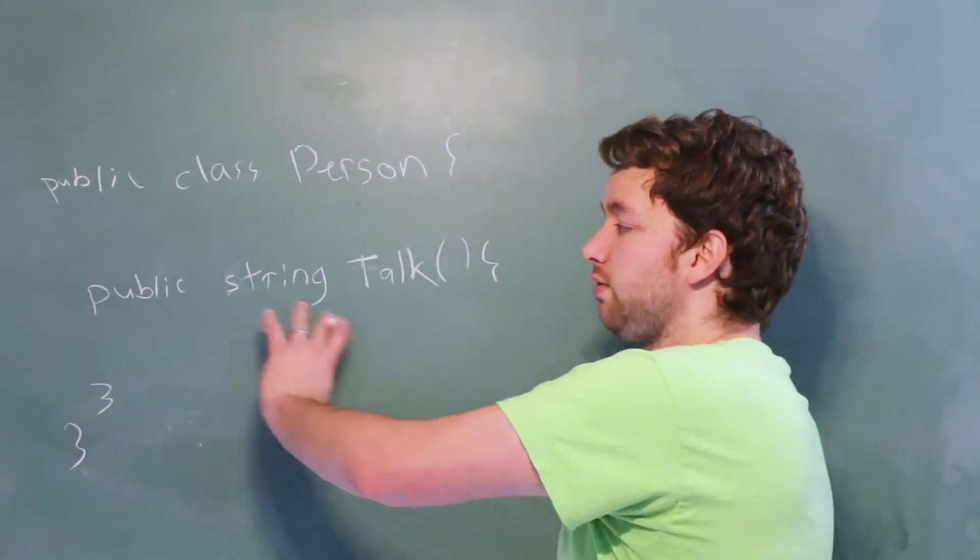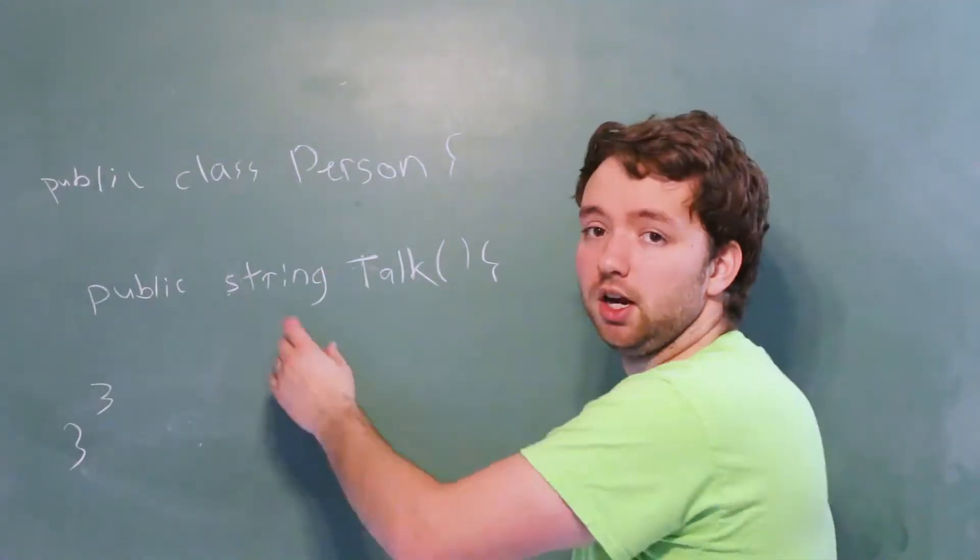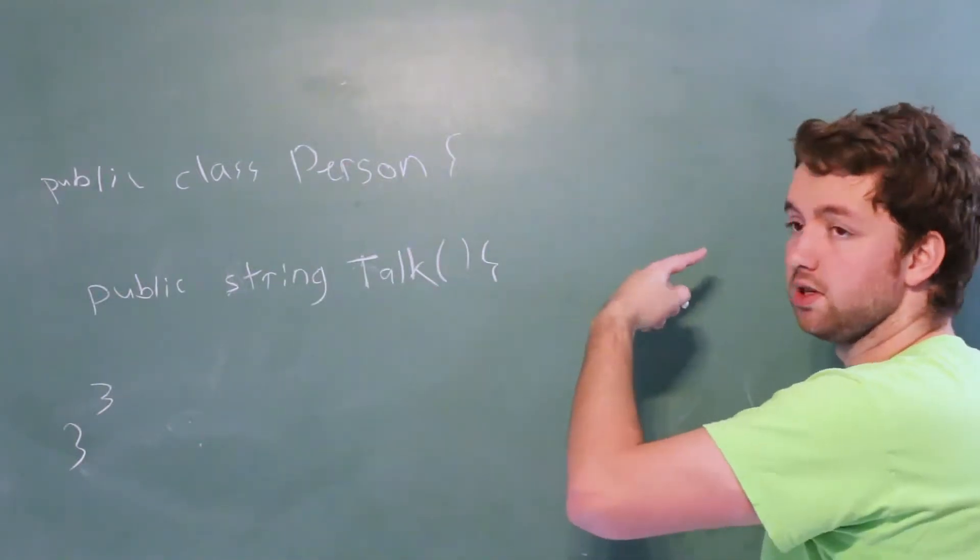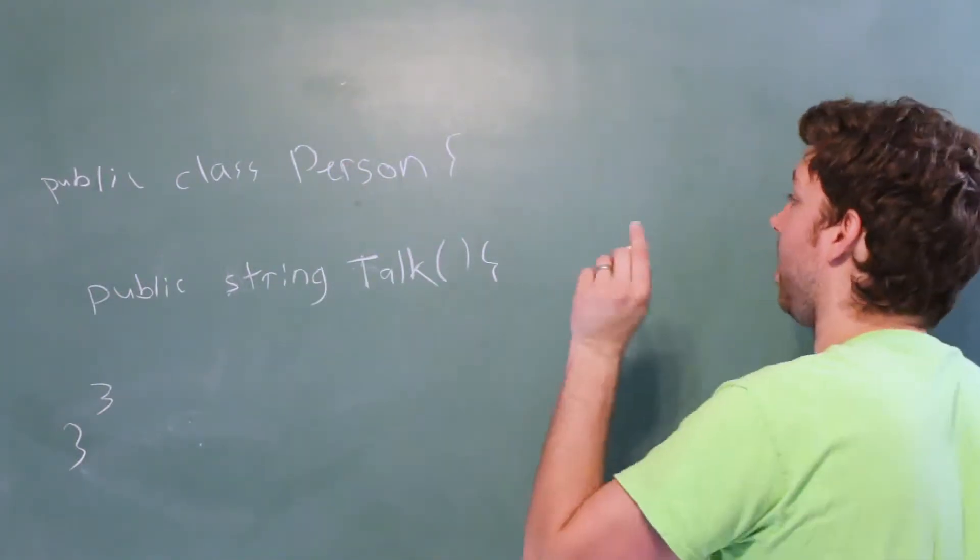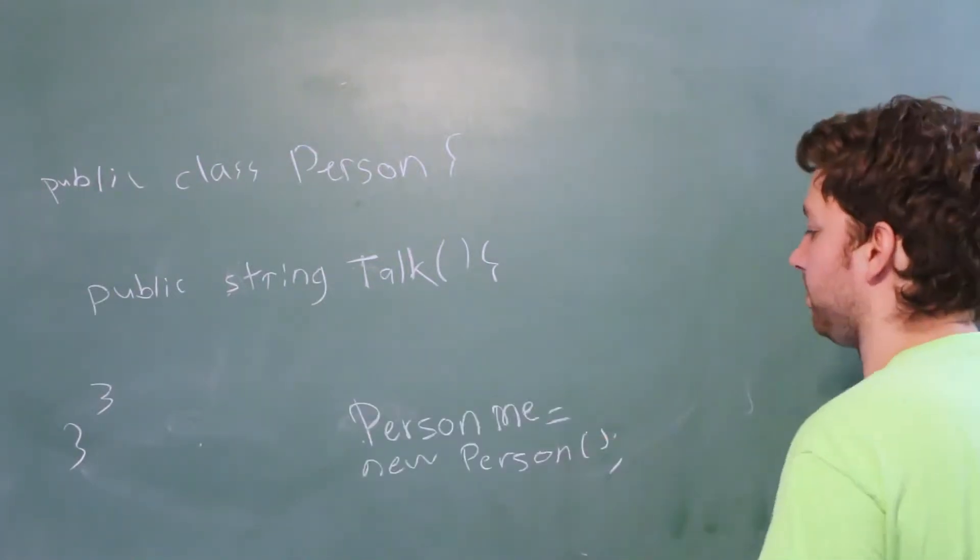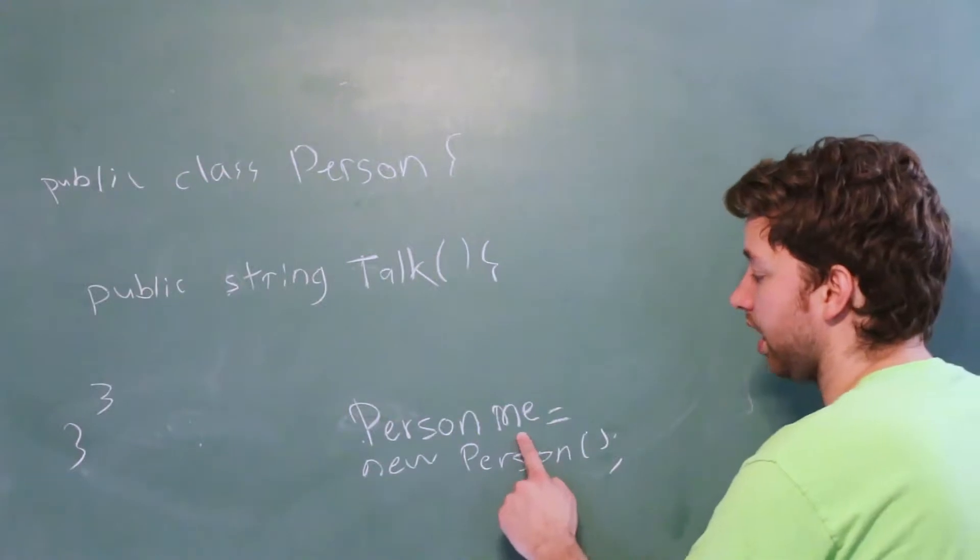So let's just say we built some awesome method code here. How would we actually use this? Well, first we need to create a new person. So somewhere else in our code, we would say person, give it a name, new person, something like this, then the identifier is me.